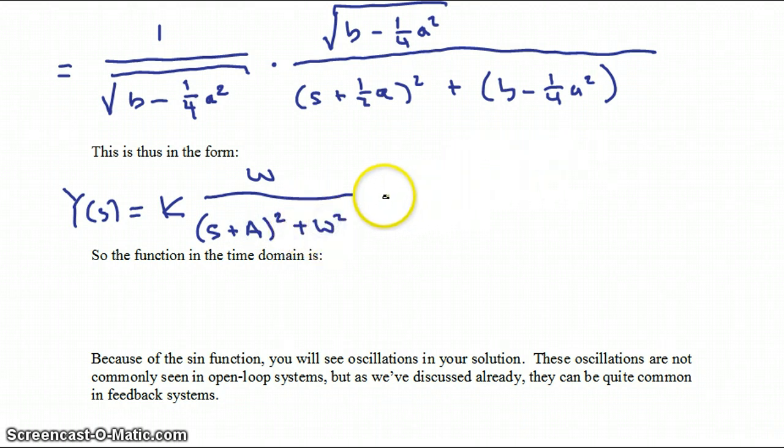Now if we look up that in our inverse Laplace transform table, we'll find that this maps to a function Y of T is equal to our constant, which is out front, times E to the minus capital A T times the sine of omega T.